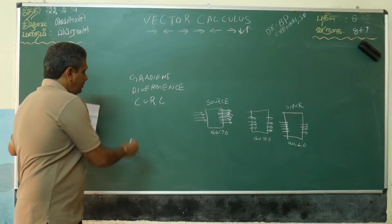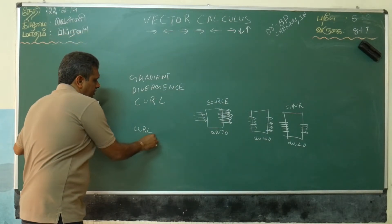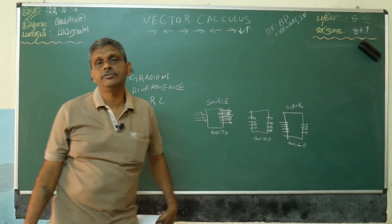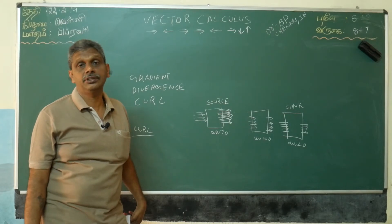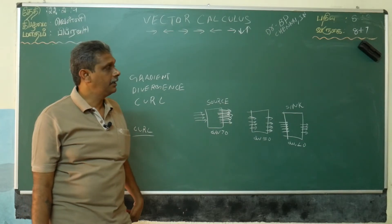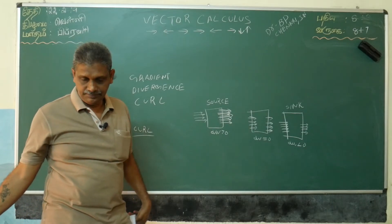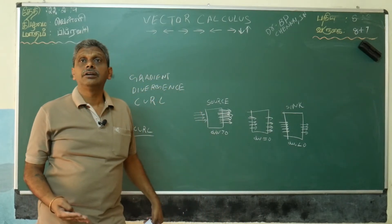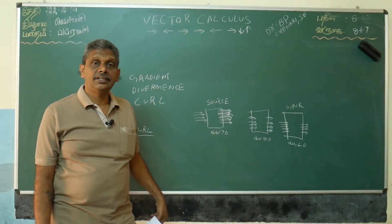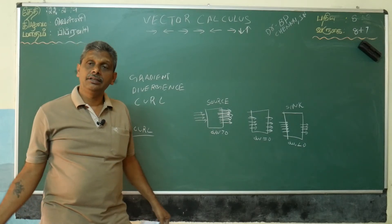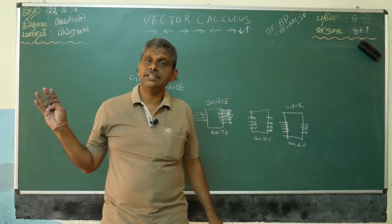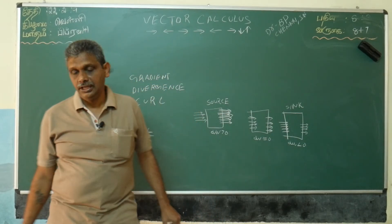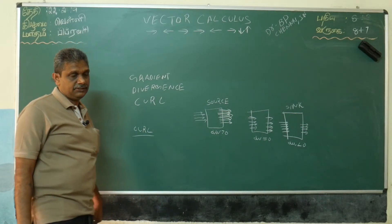Next part is curl, very important. Curl means about one point, the rotational flow force, a rotational flow about a particular point in a vector field. The best example is recently in whole Tamil Nadu, very sad, we have suffered a lot. In Chennai, Vardah cyclone, then in Trichy that side, south side, Gaja cyclone. Because of rotational force, cyclones will come.